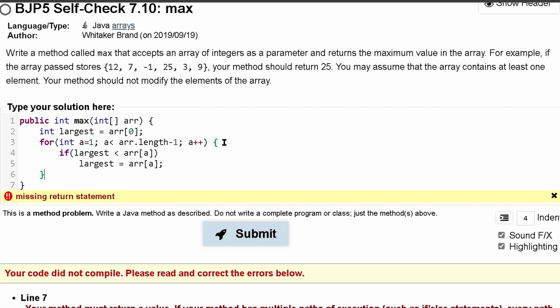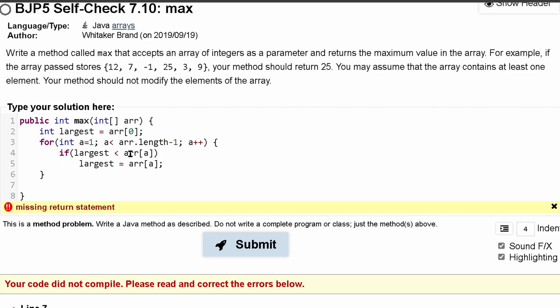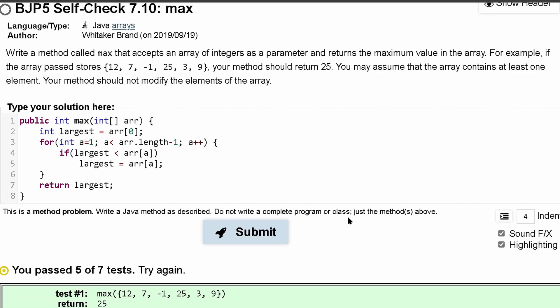Oh, and we're missing our return statement. So once we are done with our for loop, that means we've looked through everything. We're just going to return largest. And so we can submit this.